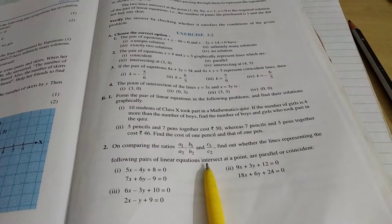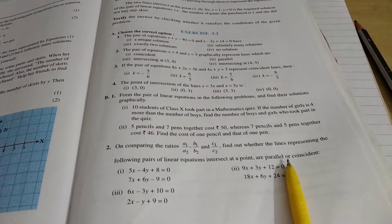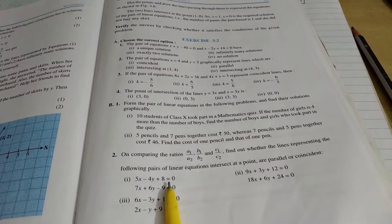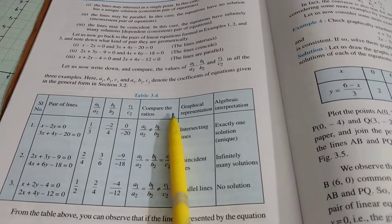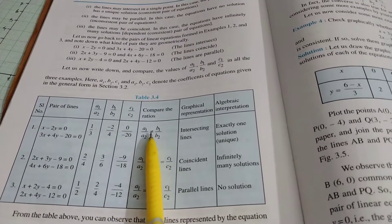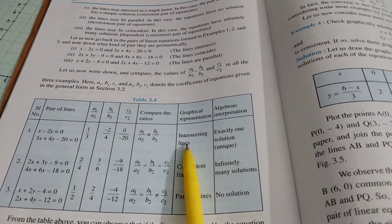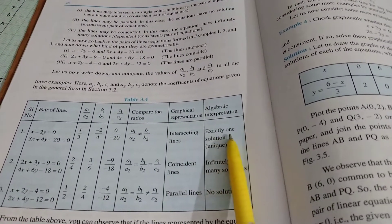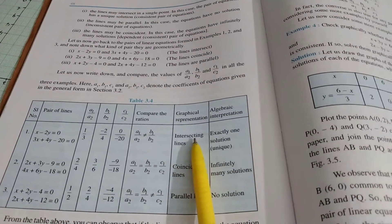So you have to understand what is intersect at a point, parallel or coincident from here. I will show you the formula. As you see, compare the ratio. When we have A1 by A2 not equal to B1 by B2, then it is called intersecting or exactly one solution, unique.